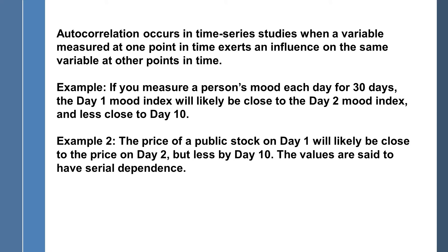Here's another example outside of psychology. The price of a public stock — equities traded on the market — on day one will likely be close to the price on day two, but less so by day ten. If this is the case, then the values are said to have serial dependence. This is actually a good thing for stock traders, because if you have information about the time series, you can get a pretty decent sense from one day to the next of how much change to expect.